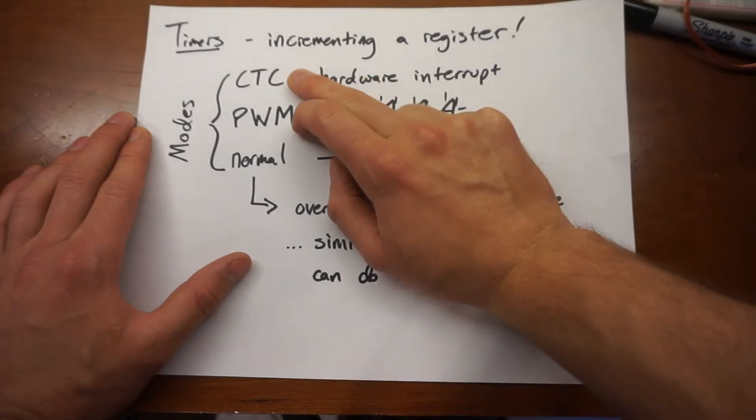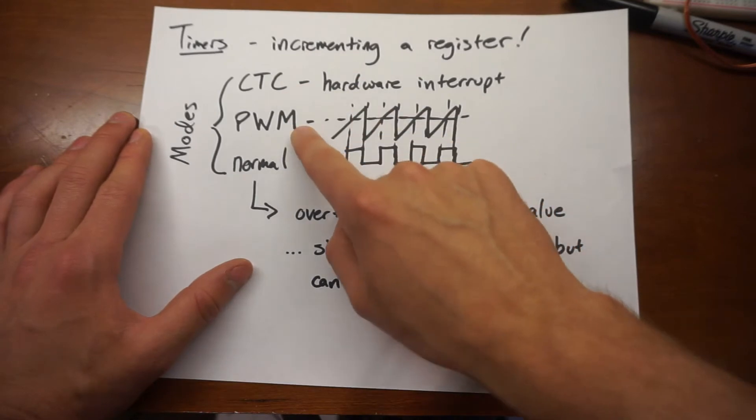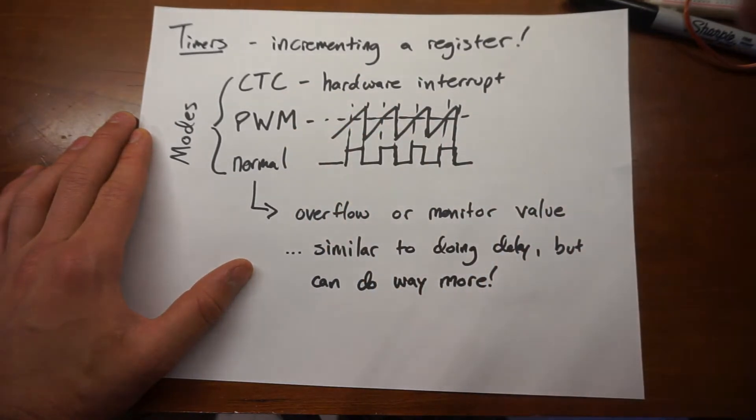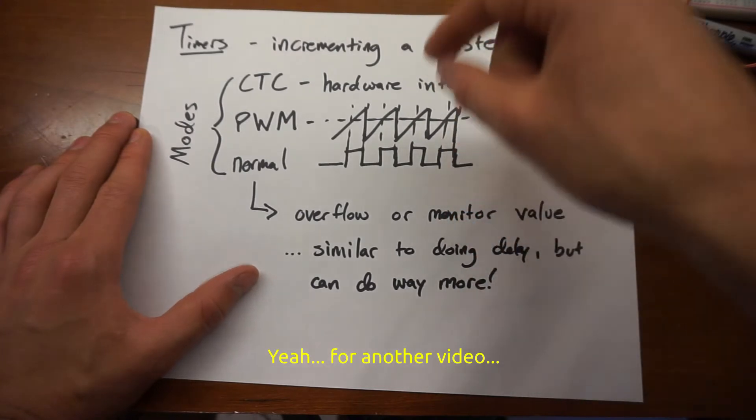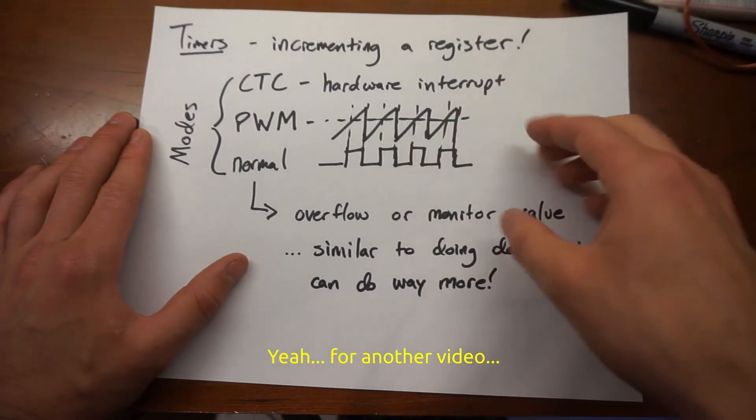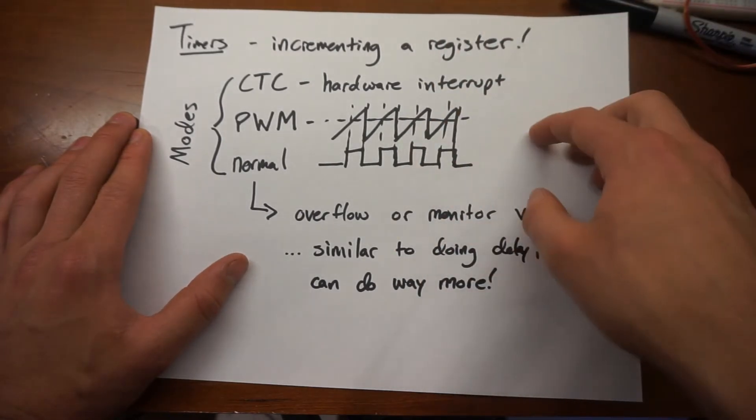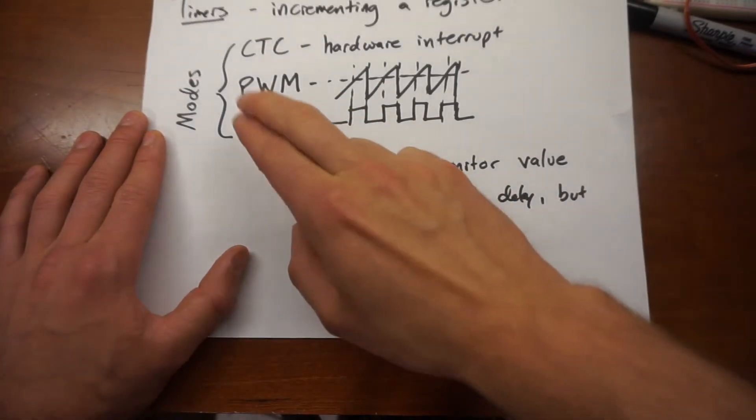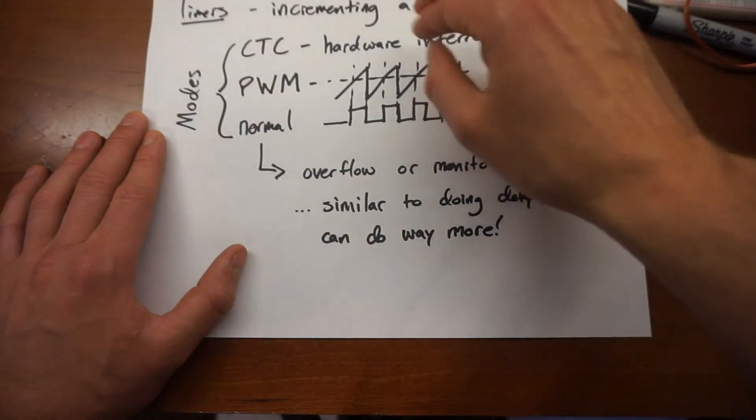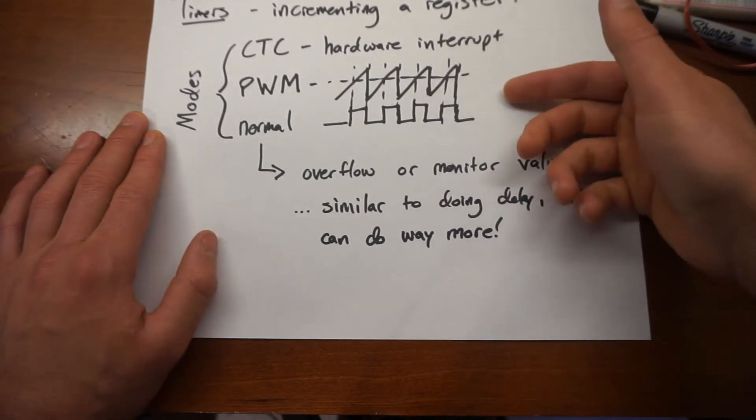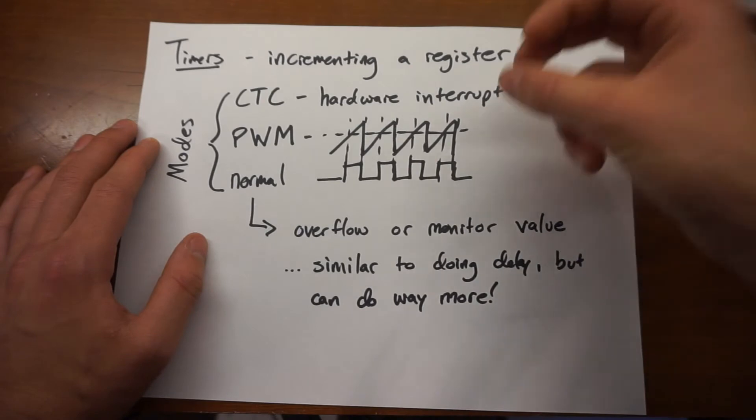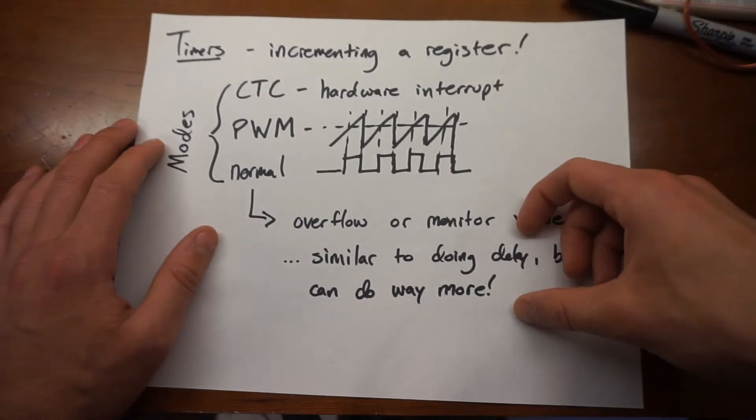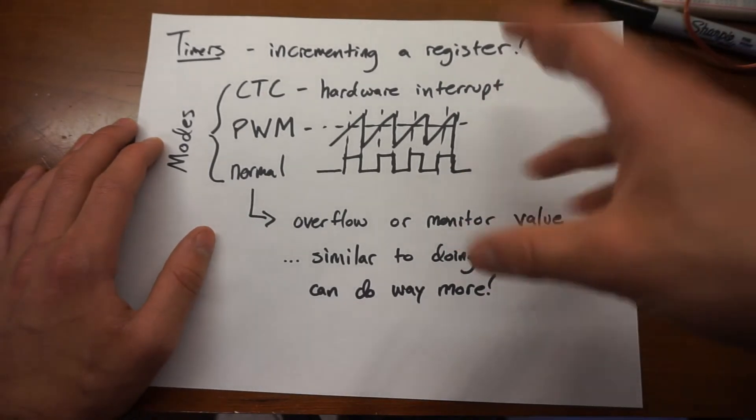I just want to briefly mention there are a few different types of modes that you can put your timer into. CTC, which is Clear the Timer on Compare, or PWM. Those are basically set-and-forget modes where you set certain interrupts and registers to do different things. Today we're going to talk about using the timer in the normal mode, which still uses some interrupts, but it's a little bit less done up in the hardware and it's more on the front end of the code. It's a little bit slower, but it actually works out.